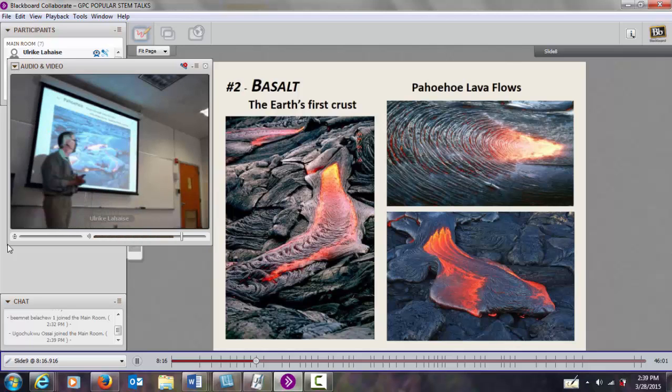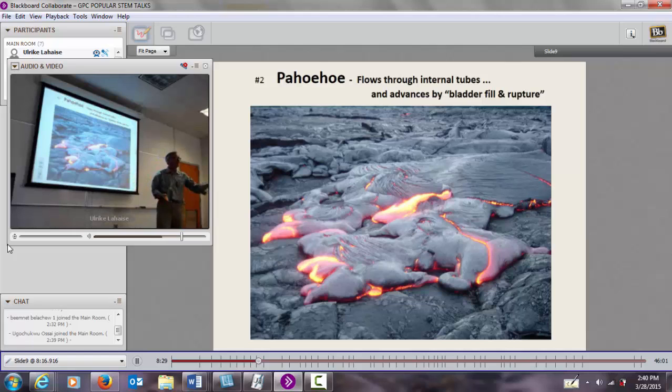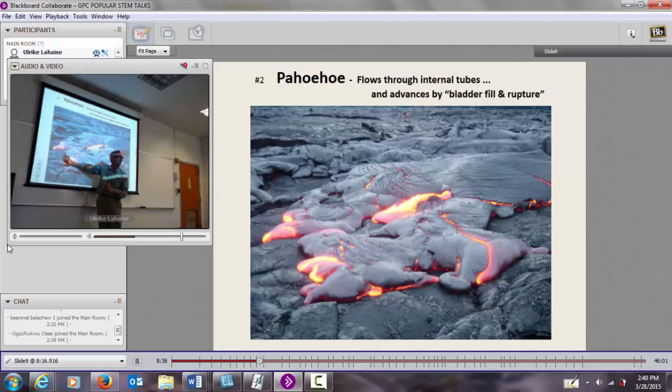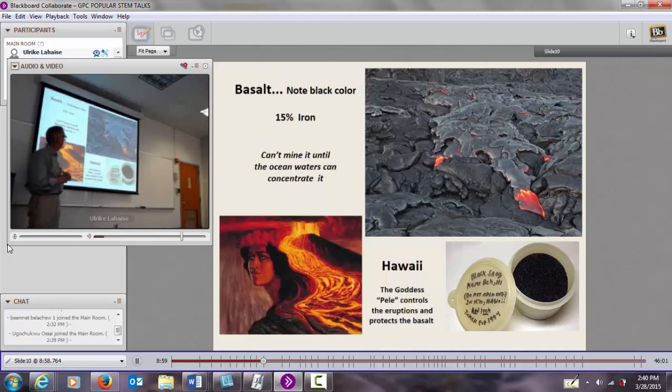When we have a big volcanic eruption, we're releasing water. The water goes streaming up, producing static electricity, so eruptions have big lightning clouds and lots of rain. We release the oceans by melting that peridotite and having the volcano erupt and make the oceanic crust. This rock is rock number two, called basalt. This black color is caused by 15% iron. That iron is so tightly tied up we can't mine it.